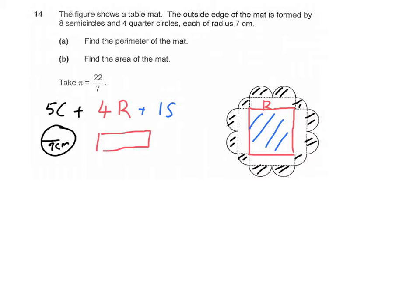And the length of the rectangle is the diameter times 2. So that would be 14 times 2 equals to 28.